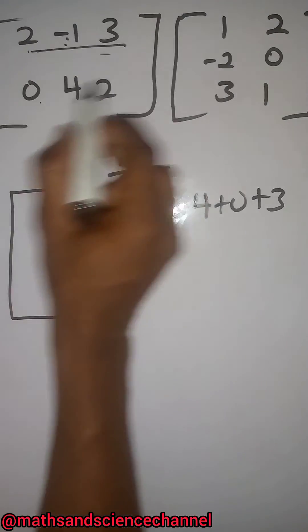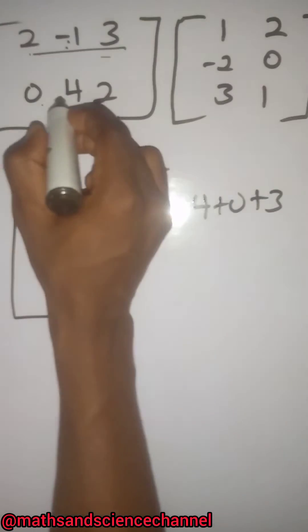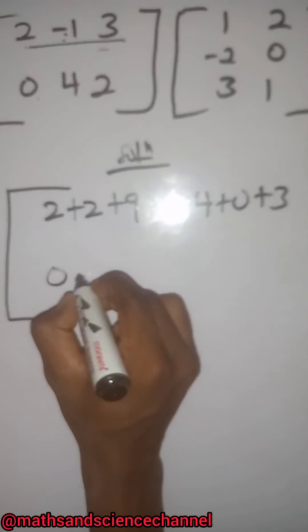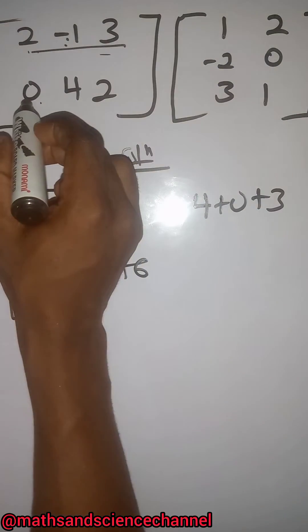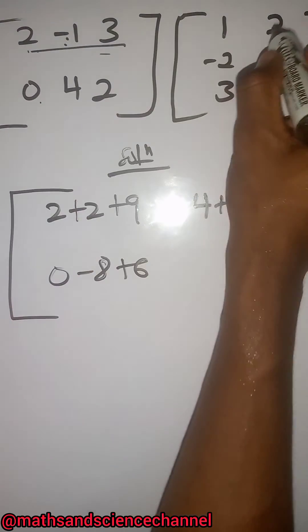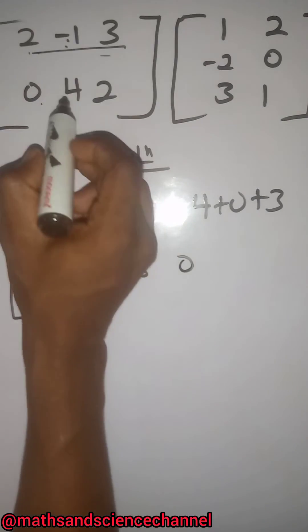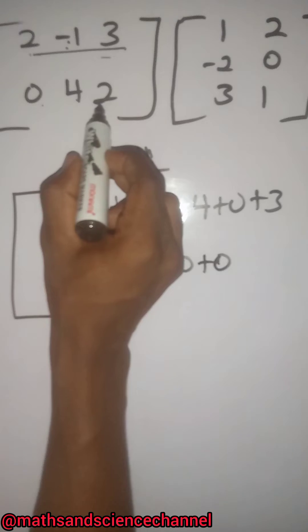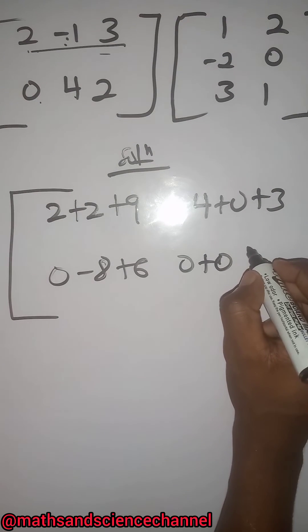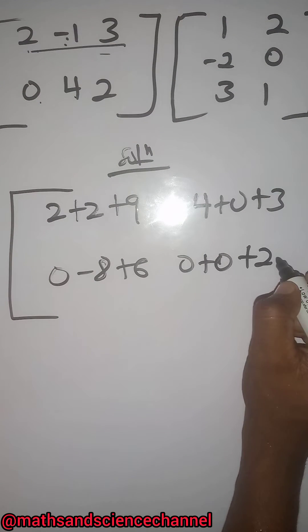0 multiplied by 1 is 0, 4 multiplied by negative 2 is negative 8, 2 multiplied by 3 is 6. And then for the last one we have 0 multiplied by 2 gives us 0, 4 multiplied by 0 gives us 0, and then 2 multiplied by 1 gives us 2.